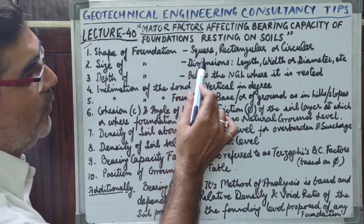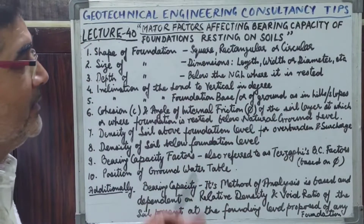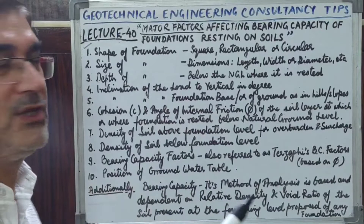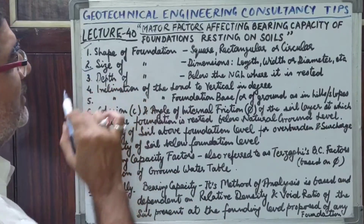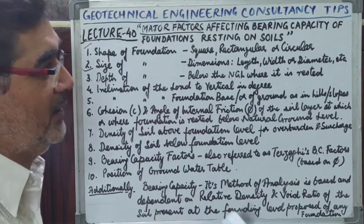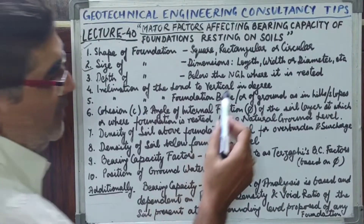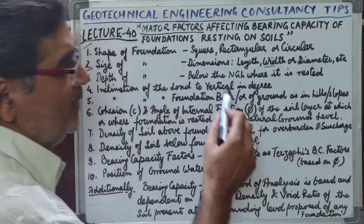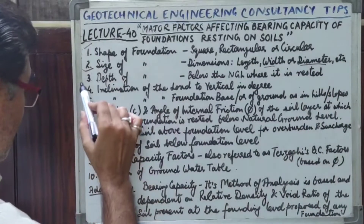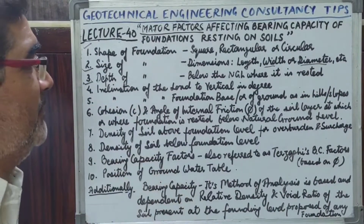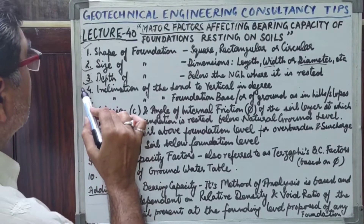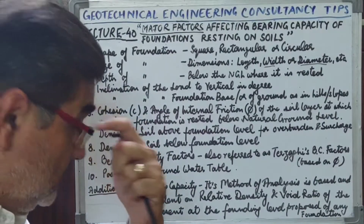The shape of the foundation may be square, rectangular, or circular. If it is a square footing, its length and width will be equal. If it is a rectangular footing, it will have different dimensions. Factor three is the depth of the foundation proposed below the natural ground level. Factor four is the inclination of the load to the vertical, in degrees.